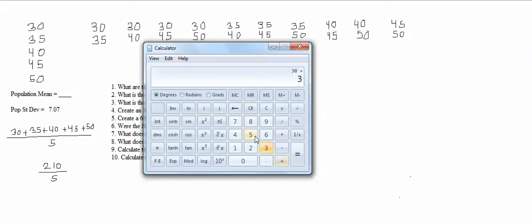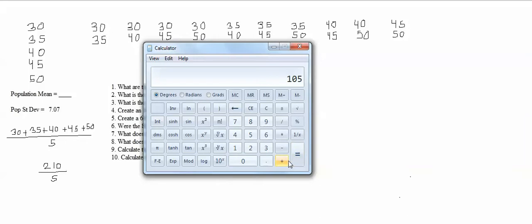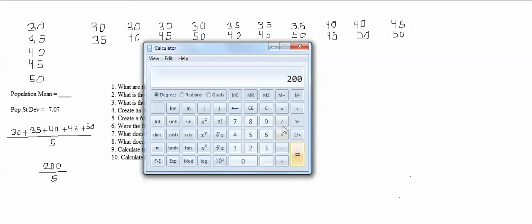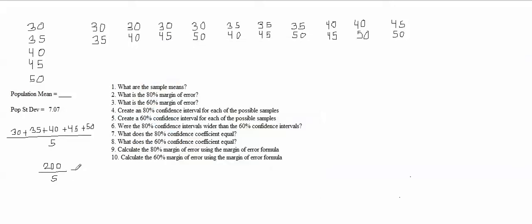30 plus 35 plus 40 plus 45 — oh, it says 150. Let me double check that. 30 plus 35 is 65. Plus 40 is 105. Plus 45 is 150. And then plus 50 is 200. So the top is actually 200. 200 divided by 5 is 40. So the population mean is 40.